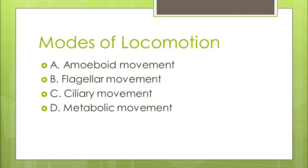Now we will discuss modes of locomotion. There are four different types based on the locomotory organelle: if by pseudopodia, it is called amoeboid movement or pseudopodial movement; if by flagella, it is flagellar movement; if by cilia, it is ciliary movement; and if by myonemes, it is called metabolic movement, also known as metaboly or gliding movement. Now we will discuss each mode one by one.